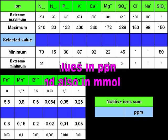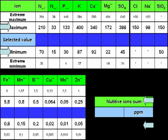Maximum and minimum lines of ionic values indicate the ranges where most of the recognized hydroponic researchers are working in their formulas. The other values reported as extreme maximum and minimum are those used in very few extreme formulas.